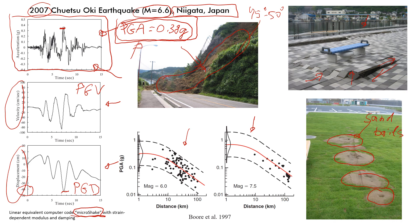These plots were provided by the researcher Boor — there's one for magnitude 6 and one for magnitude 7.5. Our earthquake had a magnitude of 6.6, so let's go with the magnitude 6 plot. It's still an estimation, not very accurate, but we'll try to make it as accurate as possible.